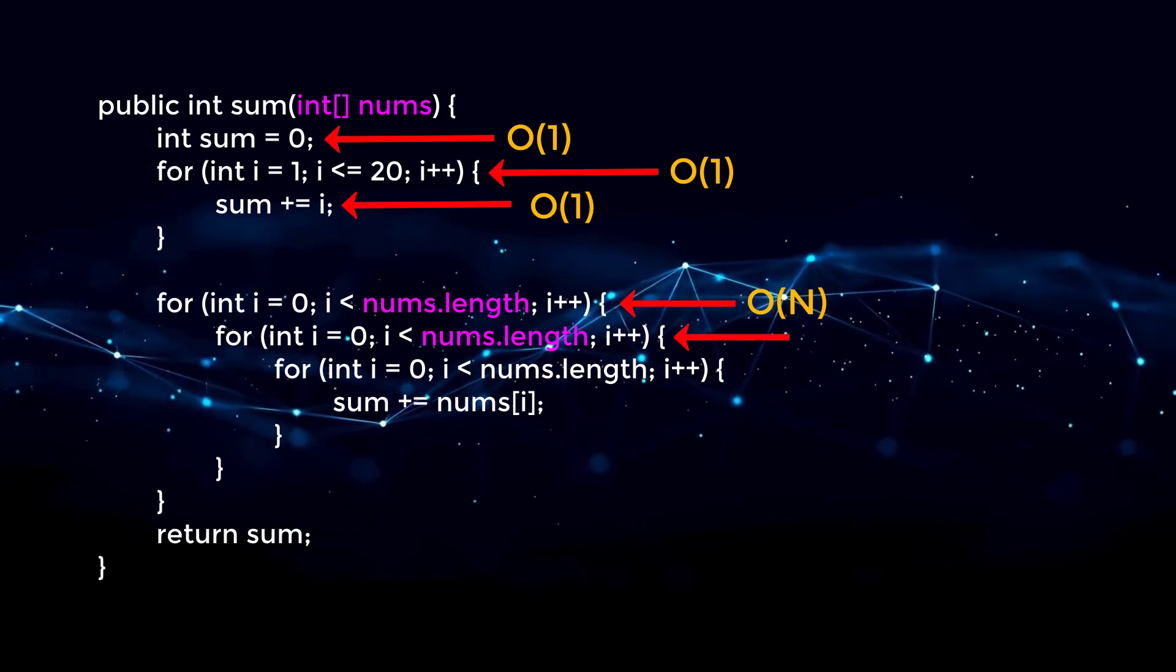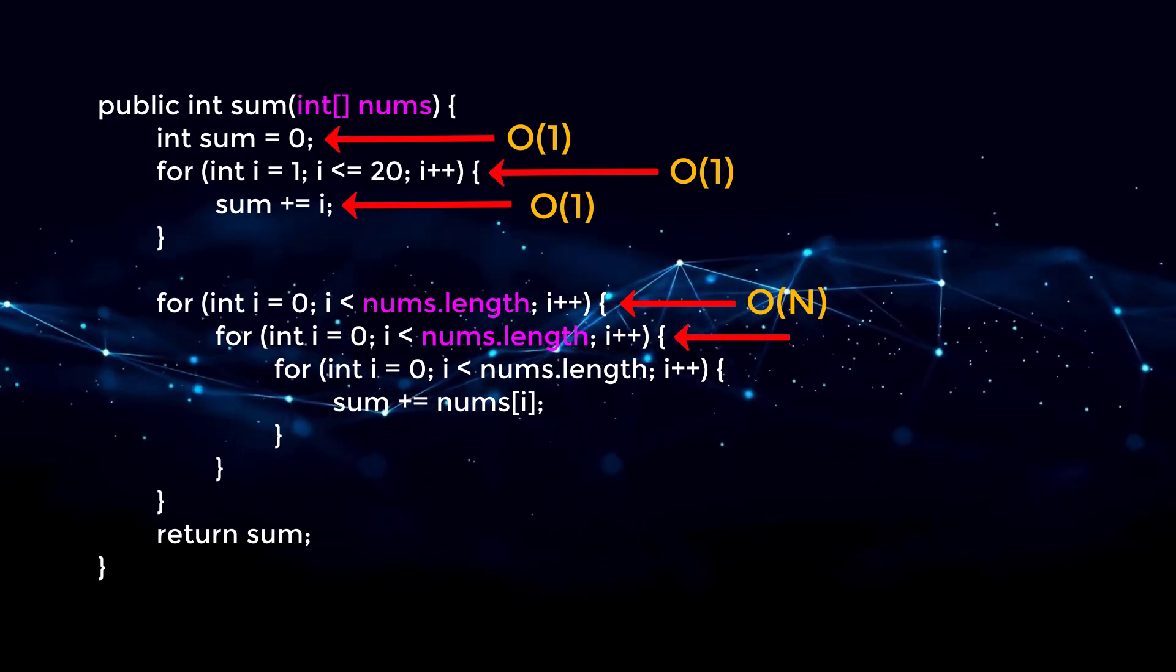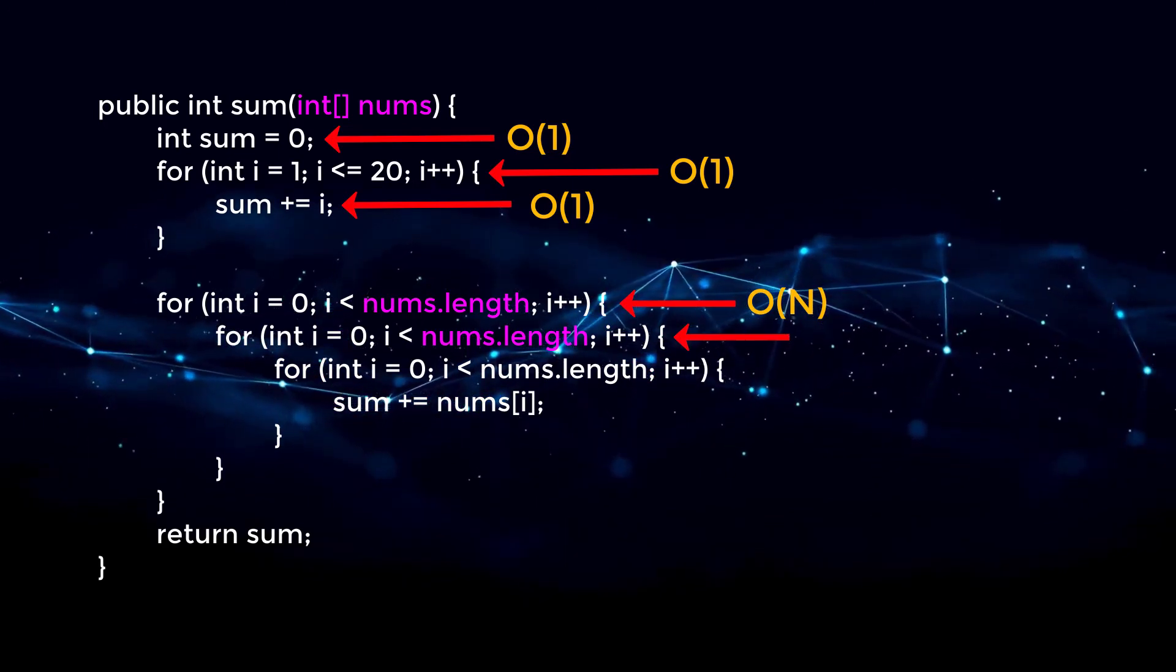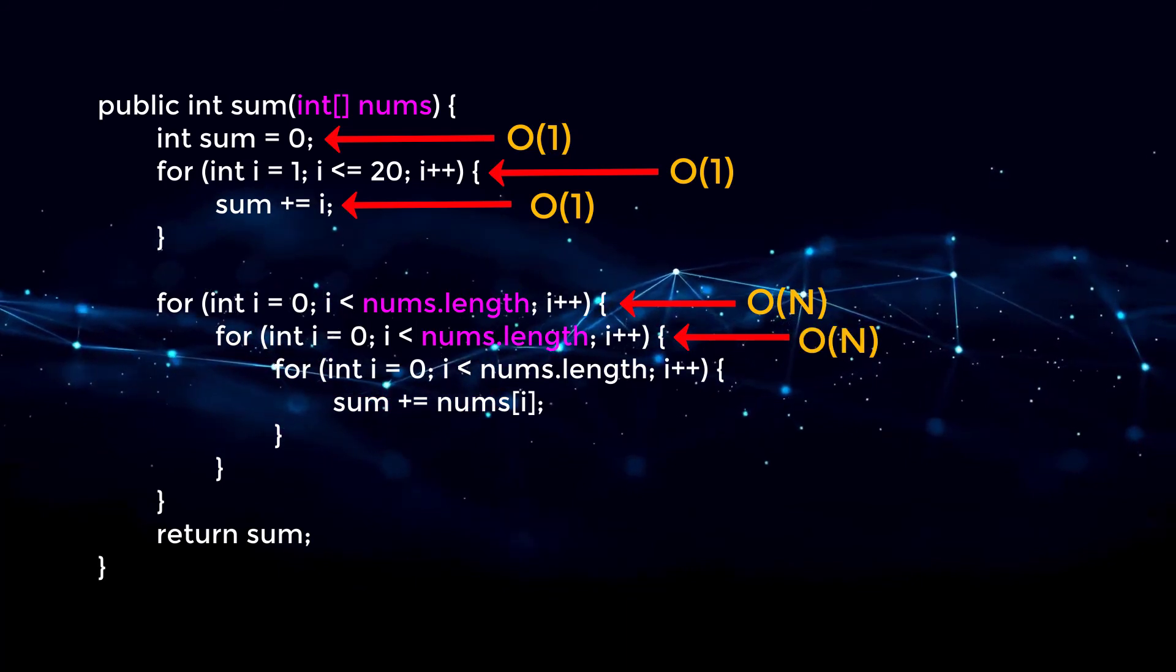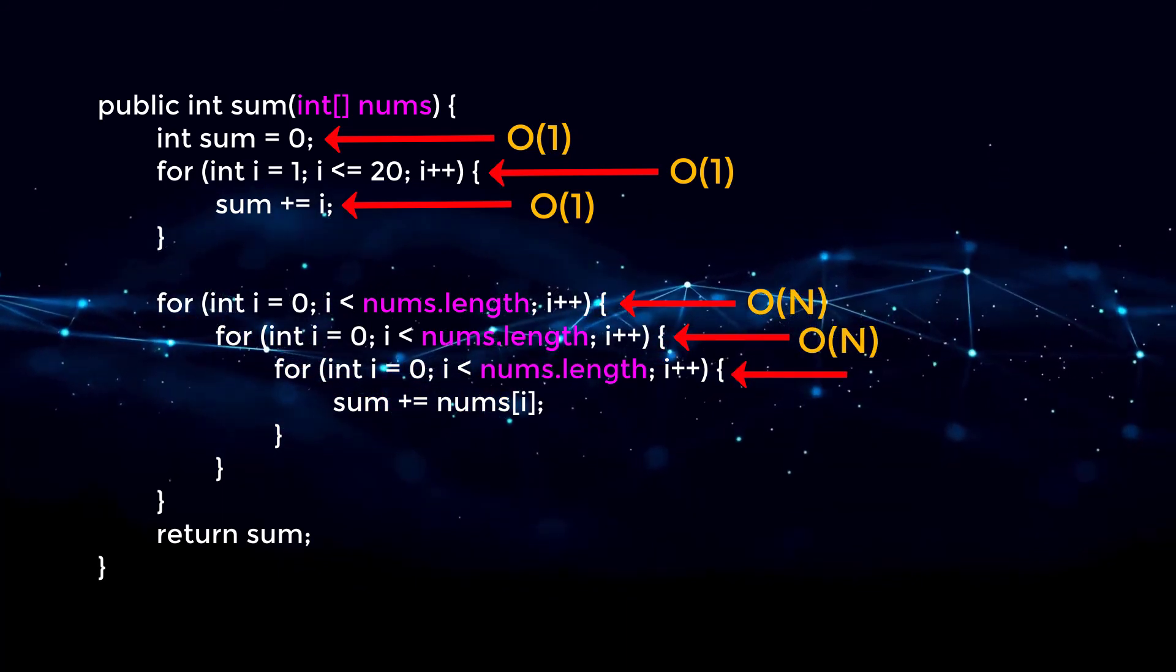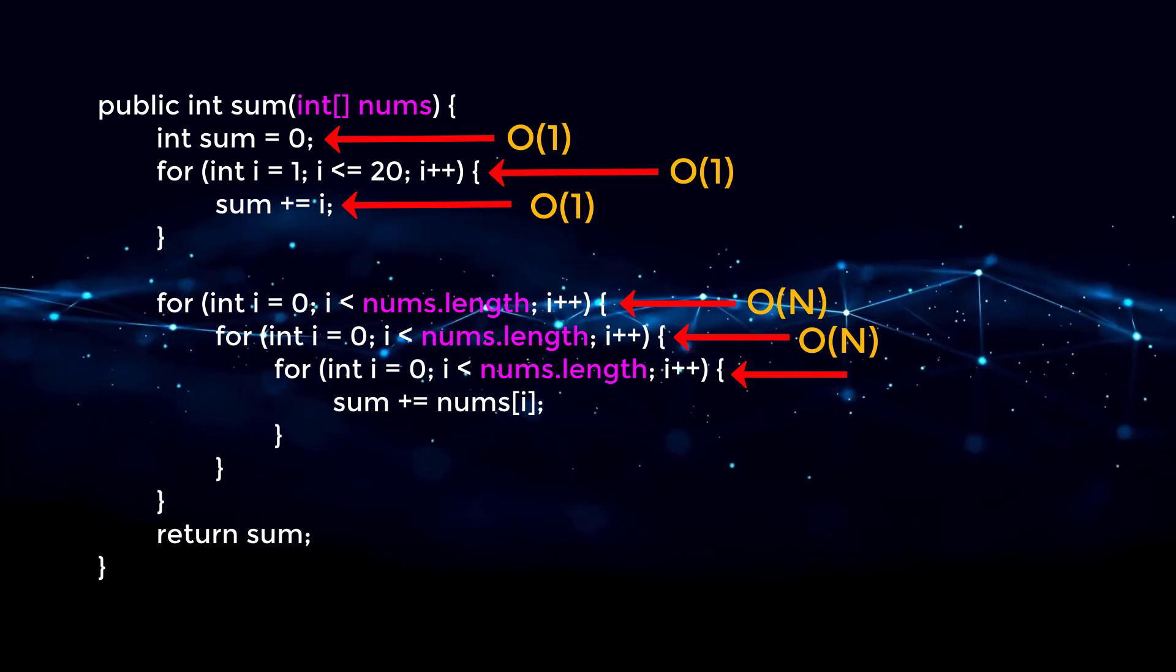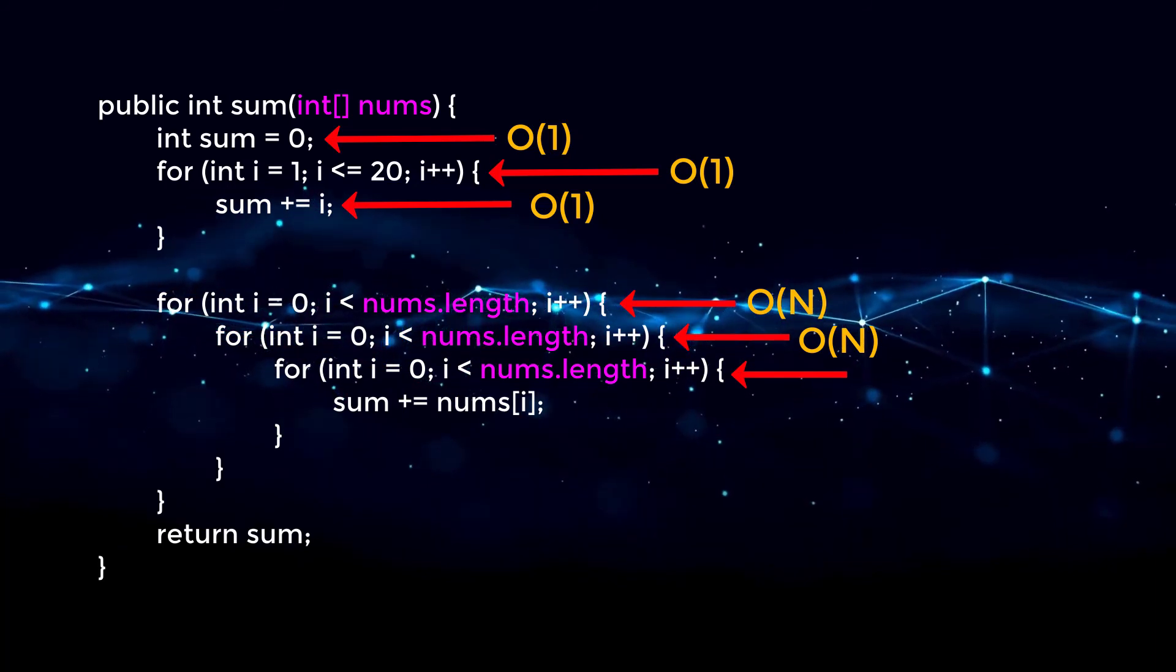In the next line, we're going to be doing the same exact thing. We're looping up to nums.length. So we can also say this is Big O of n. Then in the third for loop, we're doing the same thing. We're looping up to nums.length. So this is Big O of n.